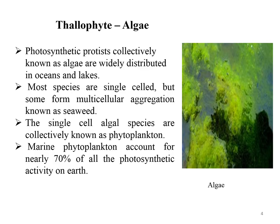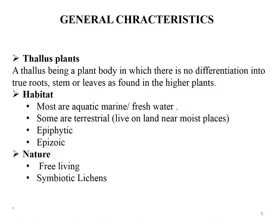Photosynthetic protists collectively known as algae are widely distributed in oceans and lakes. Most species are single-celled, like Chlorella and diatoms, but some form multicellular aggregations commonly known as seaweed. Single-celled algae species are collectively known as phytoplankton; although microscopic, they are very important marine organisms. Phytoplankton account for nearly 70% of all photosynthetic activity on Earth.